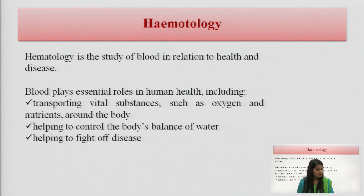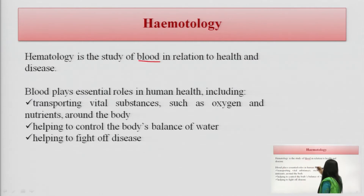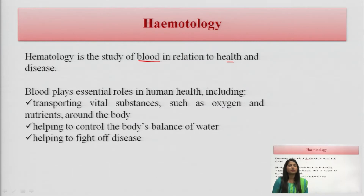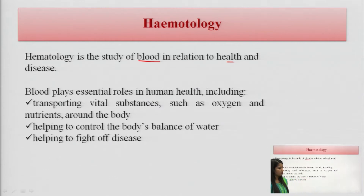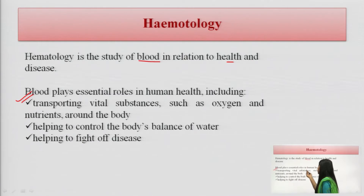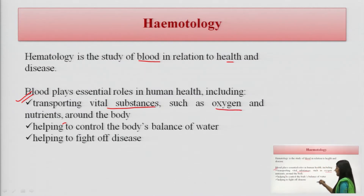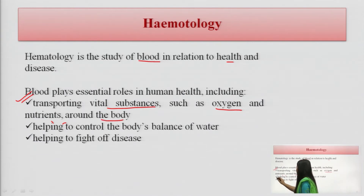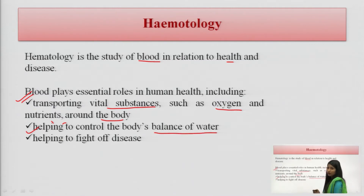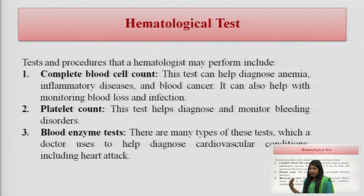In hematology, we perform testing of blood. There are different tests performed on blood, as it is the study of blood in relation to health and disease. Tests include the CBC — complete blood count — where we find levels of RBC, WBC, and there is also bone marrow biopsy. Blood plays essential roles in humans: transporting vital substances, ions, oxygen, and nutrients around the body. It also helps control body water balance and fights off disease, especially via WBC — white blood cells.